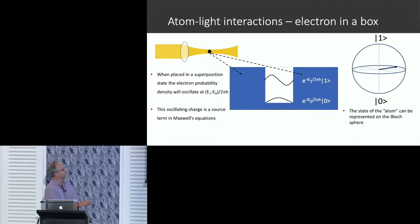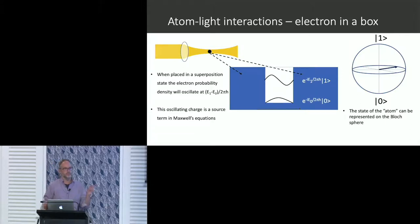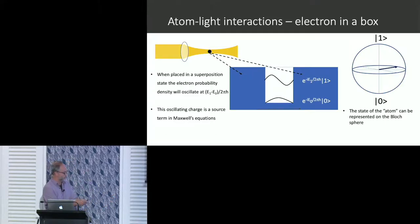If we put the system into a superposition, the electron density is going to slosh backwards and forwards at a frequency given by the energy difference of the two levels. That oscillating electron will act as a source term in Maxwell's equations — it's going to radiate. We can take the state of this two-level system and map it onto the Bloch sphere.